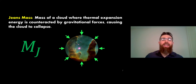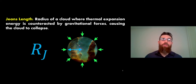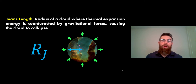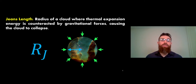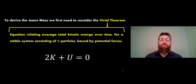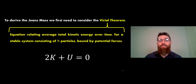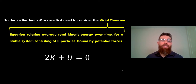If your mass is larger than the Jeans mass it means it's going to be unstable to collapse. You can do the same thing for its actual radius - the Jeans length or Jeans radius is the radius where thermal expansion energy is counteracted by gravitational forces. To work that out you can use the virial theorem, which relates the average total kinetic energy over time for a stable system of n particles bound by gravitational potential forces. The equation gives 2K (gas kinetic energy) plus the gravitational potential energy equals zero.